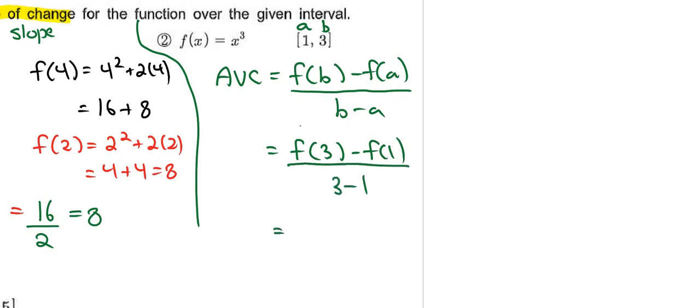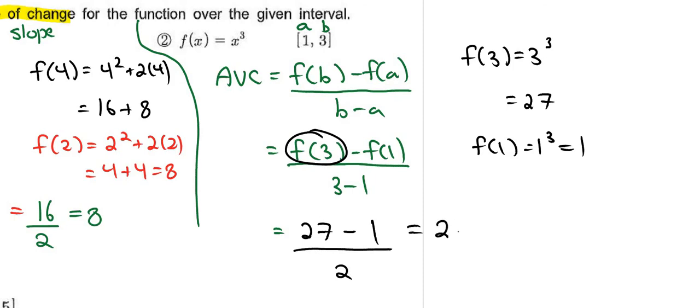Now f of 3, if I calculate this on the side, is going to equal 3 cubed which is 27, so this is 27 minus f of 1 which is 1 cubed which is 1, all over 2. 27 minus 1 is 26, and 26 divided by 2 is 13. That's your final answer.